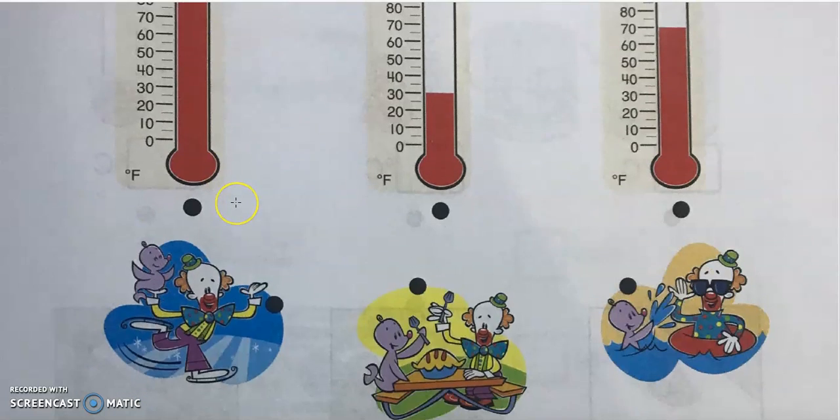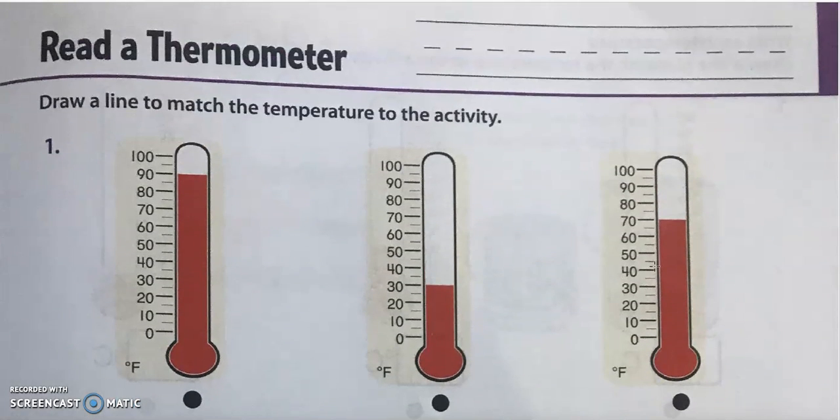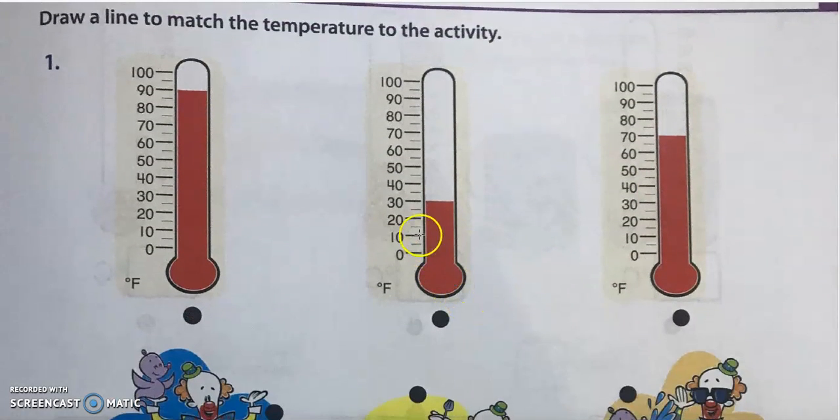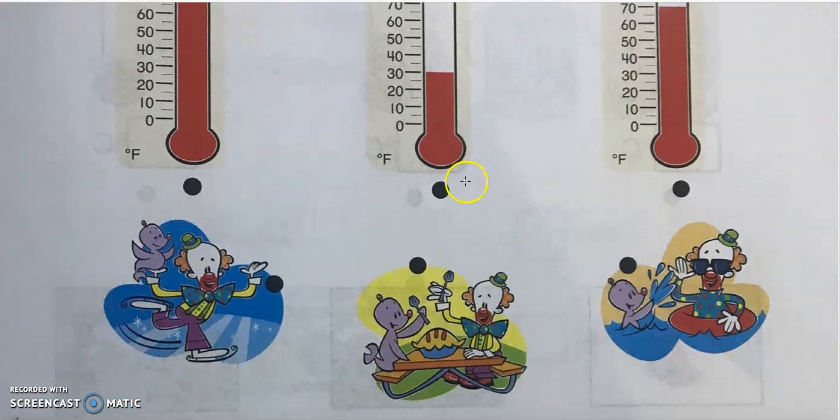Which activity would match up with 90 degrees Fahrenheit and 32 degrees Celsius? Probably this one, to go play in the water park. And number two, 30 degrees Fahrenheit is about negative one or minus one degrees Celsius. So it's quite cold, it's below zero degrees. What can you do in this weather? You can go ice skating, very cold.